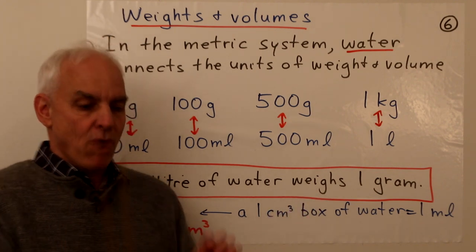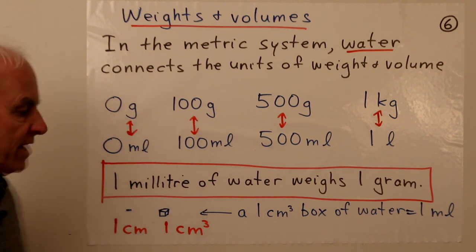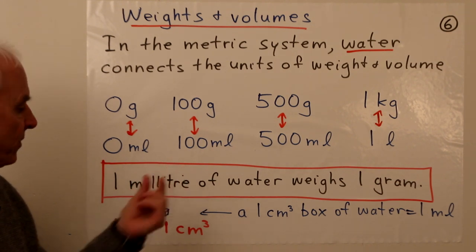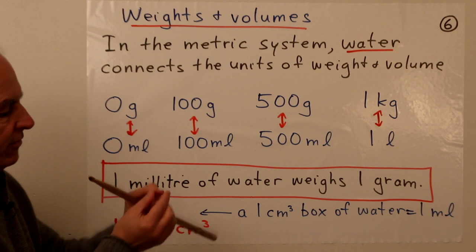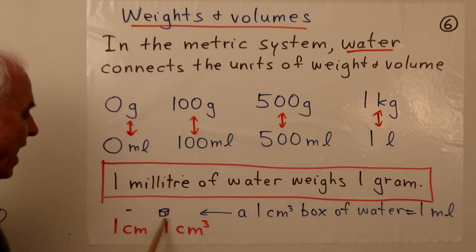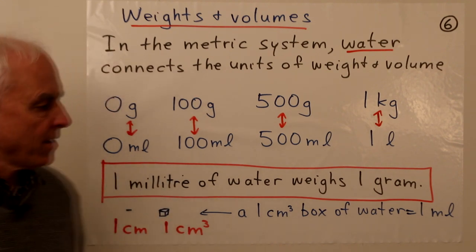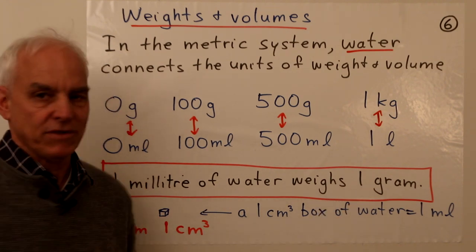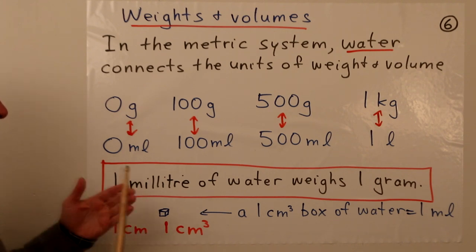How much is a milliliter of water in terms of volume? It turns out to be just one cubic centimeter. A centimeter is about this — a little less than half an inch. Here's a little box whose sides are all one centimeter — a very small box. That volume is one milliliter, and that volume of one milliliter would weigh one gram if filled with water. So in the metric system, everything works quite nicely with respect to water.